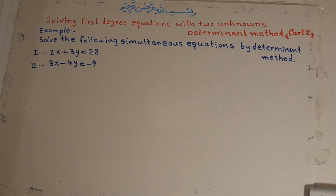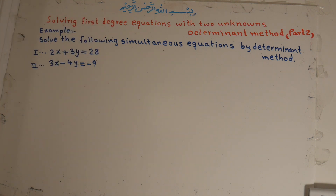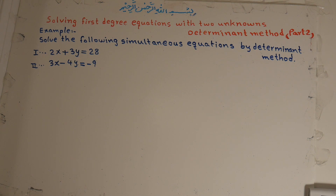Welcome to mathematics class. Our topic is solving first degree equations with two unknowns: determinant method, part two. In the previous lesson, part one, we discussed the determinant method. In this lesson, I will show you two examples of the determinant method.